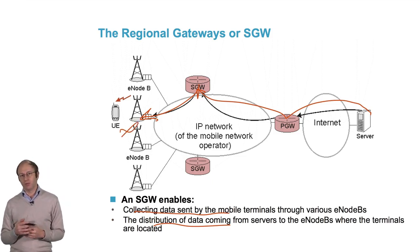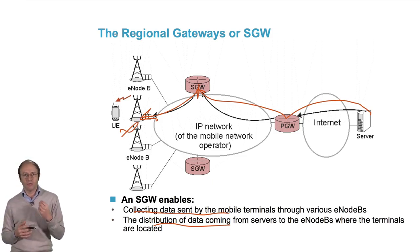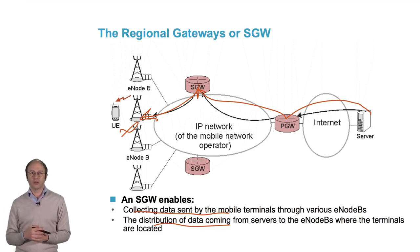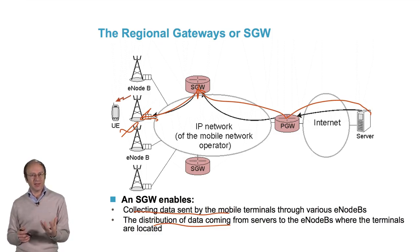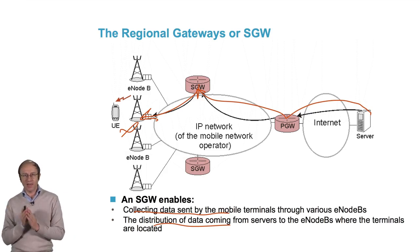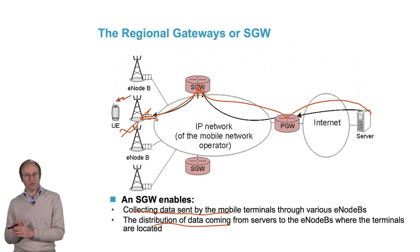The Serving Gateway and the Packet Gateway are two very important elements of the core of the 4G network. The packets that make up the data stream — for example, the video stream I locate on my smartphone — go through the P-Gateway, which is the entrance, and the Serving Gateway, which is linked to the place, the region where I'm located.